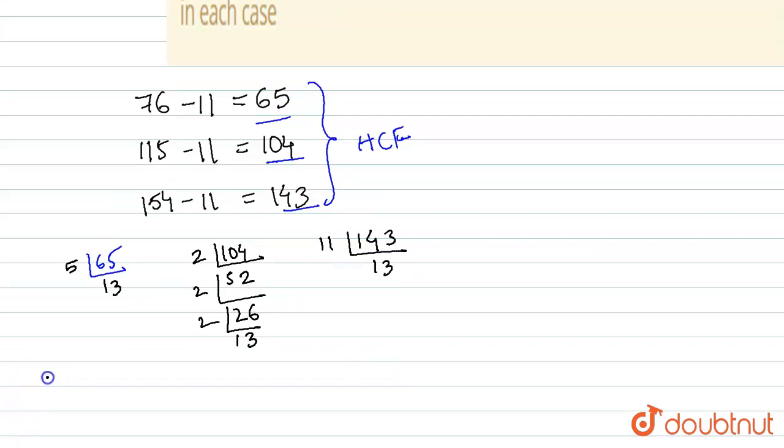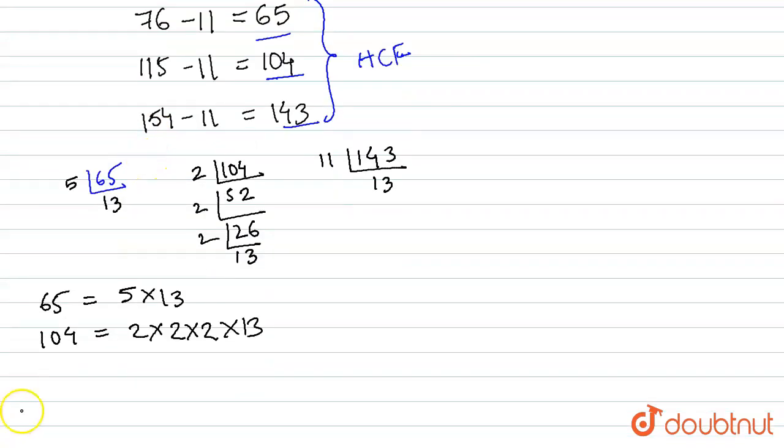Let us write the factors of each number. In 65 we got 5 times 13. In 104 we got 2 times 2 times 2 times 13. And in 143 we got 11 times 13. To find HCF, we have to find the highest common factor. The highest common factor here is 13.